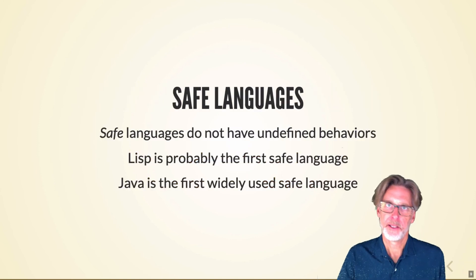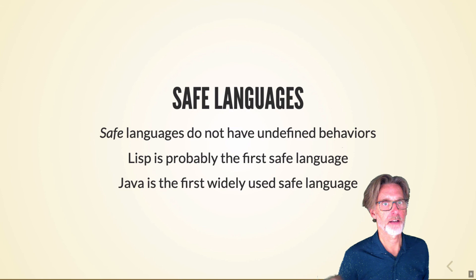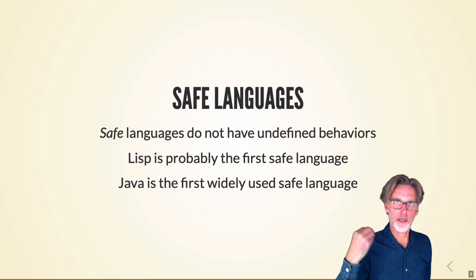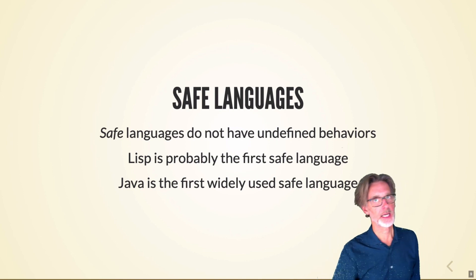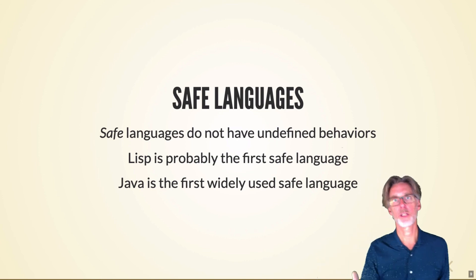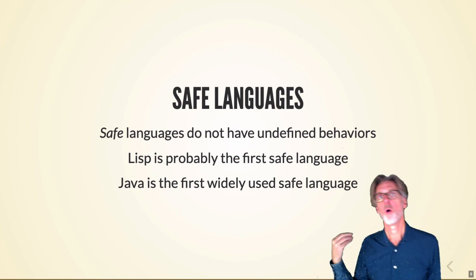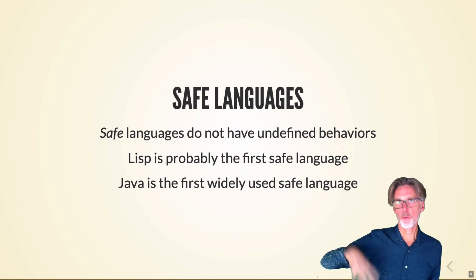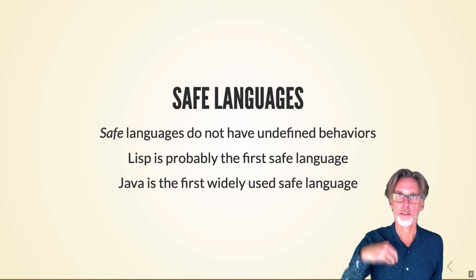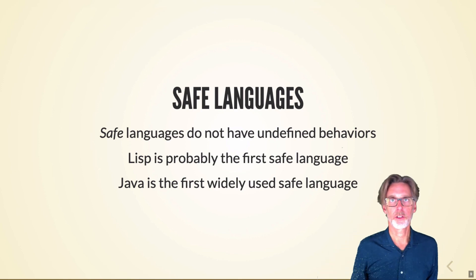So the contrast to this is safe languages. And the goal in a safe language is to avoid any kind of undefined behavior. So Java is sort of the canonical example, modern example. It's write once run anywhere. It has a predictable behavior. And the language is defined to be predictable. Java is the first widely used safe language. But what we're going to learn about this week is actually the earliest safe language ever used, which was Lisp. And we'll talk about it through its variant Scheme.